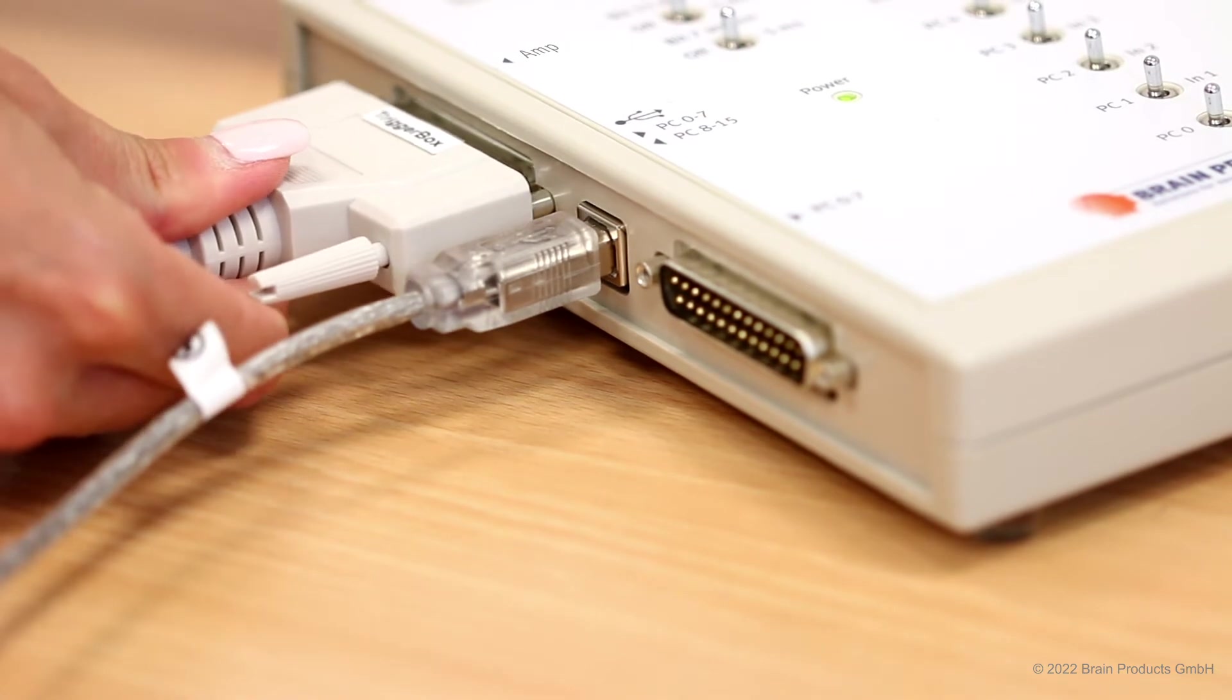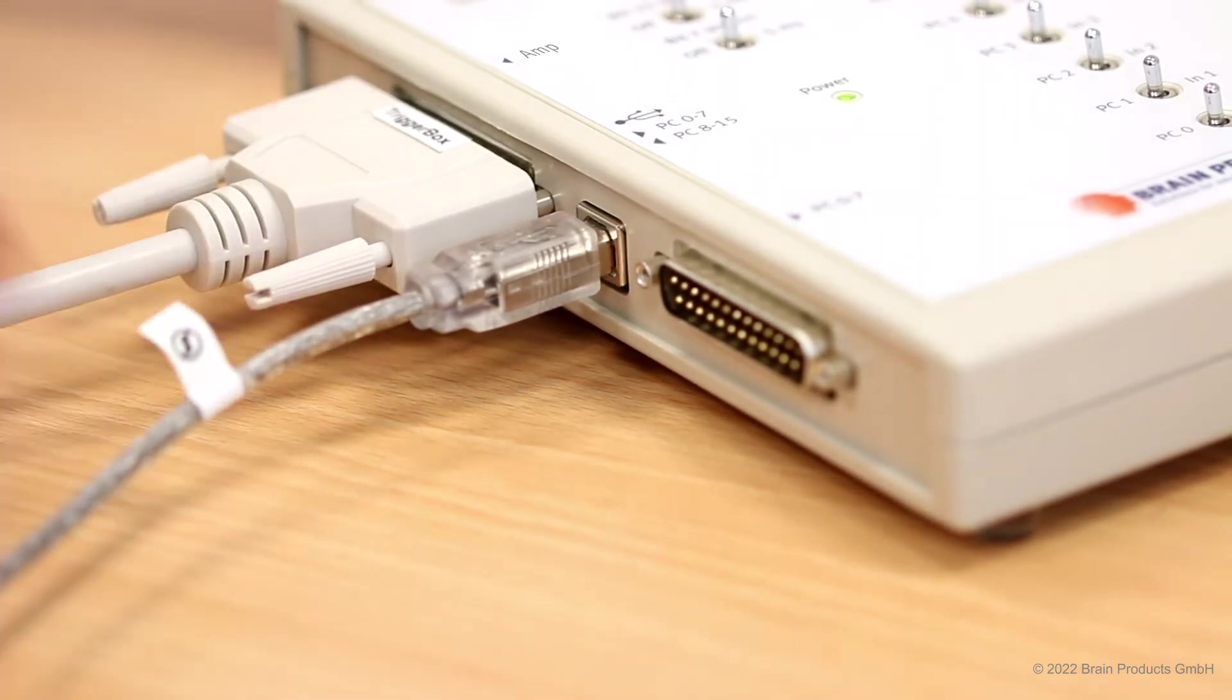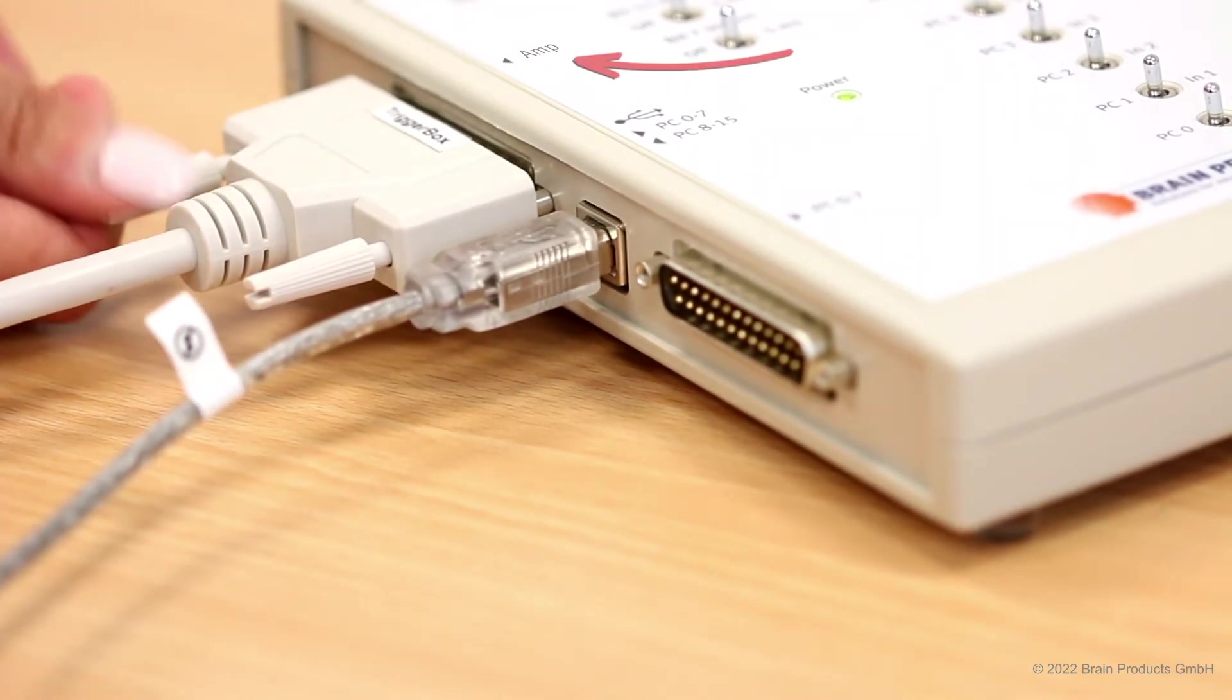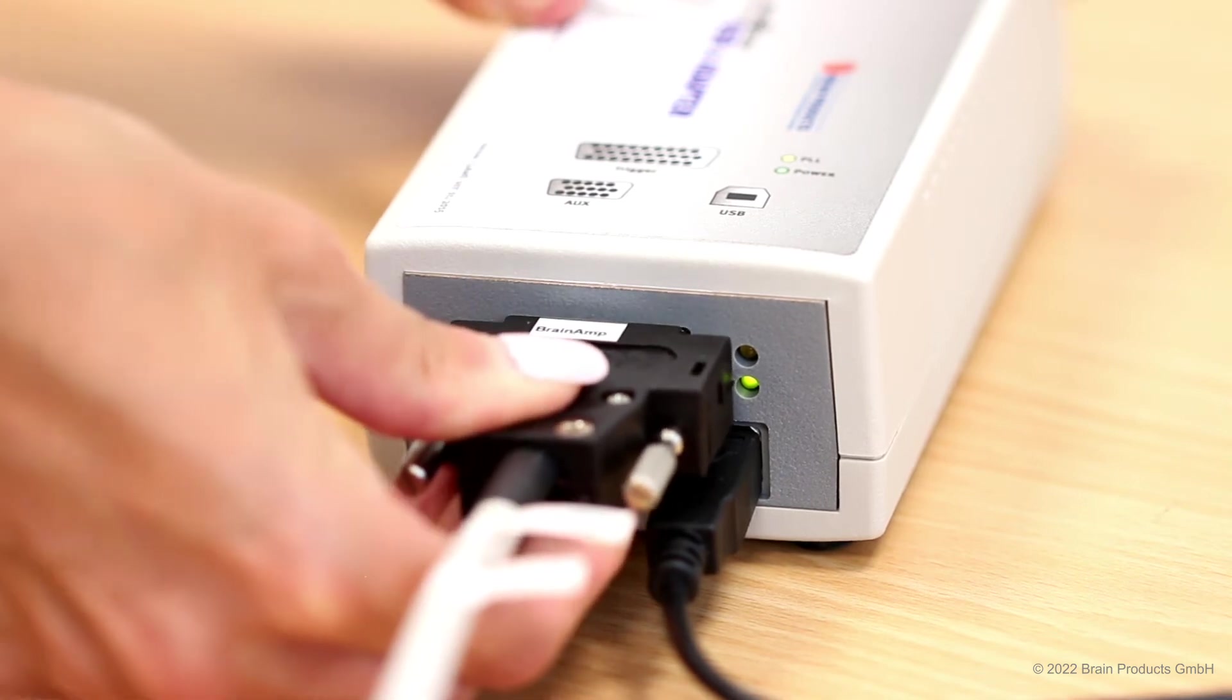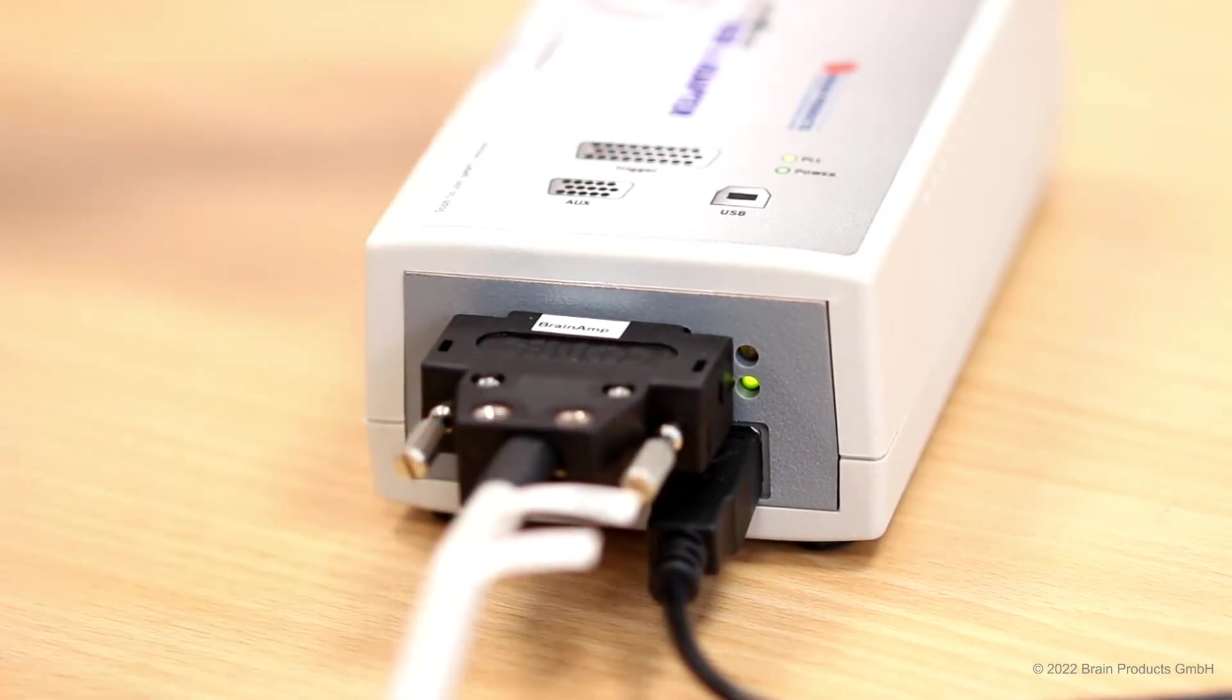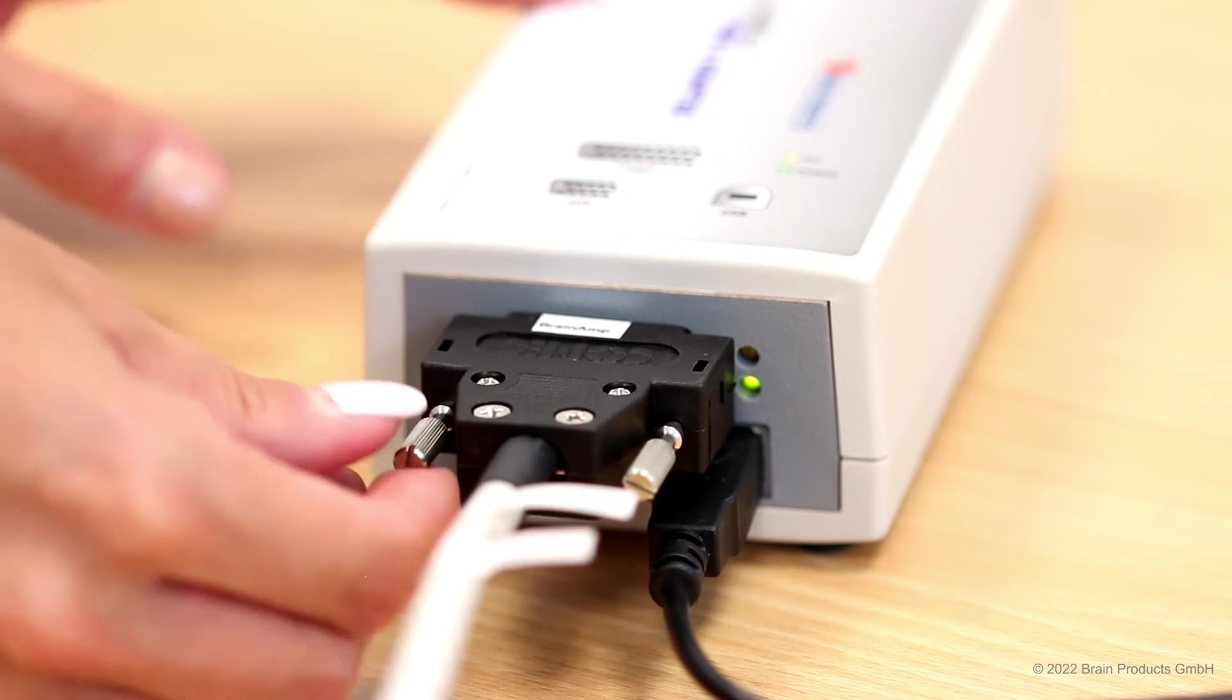Next, connect the output 25-pin DSUB port marked as AMP of the trigger box to the trigger input port of the BUA. Please use only the supplied cable for connecting the trigger box to the amplifier, as this is not a standard LPT port.